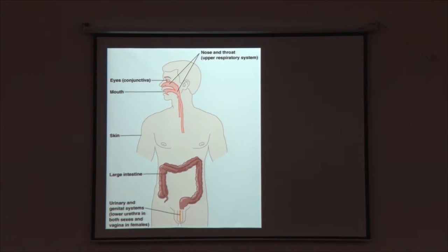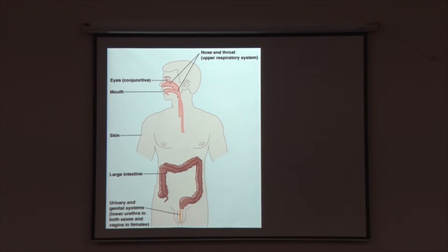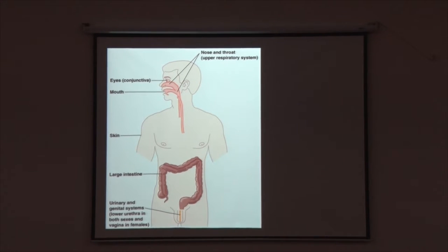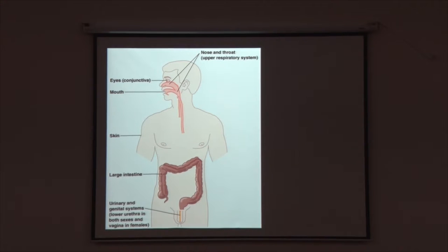The places in the body where microorganisms predominantly reside include the nose and upper respiratory tract, the eyes, the mouth, the skin, and the large intestine. We will have separate talks on the skin and the gut later in the session, as well as on urinary and genital systems. Not all parts of the body are uniformly covered by microorganisms — there are specific organs and places where they thrive and populate.